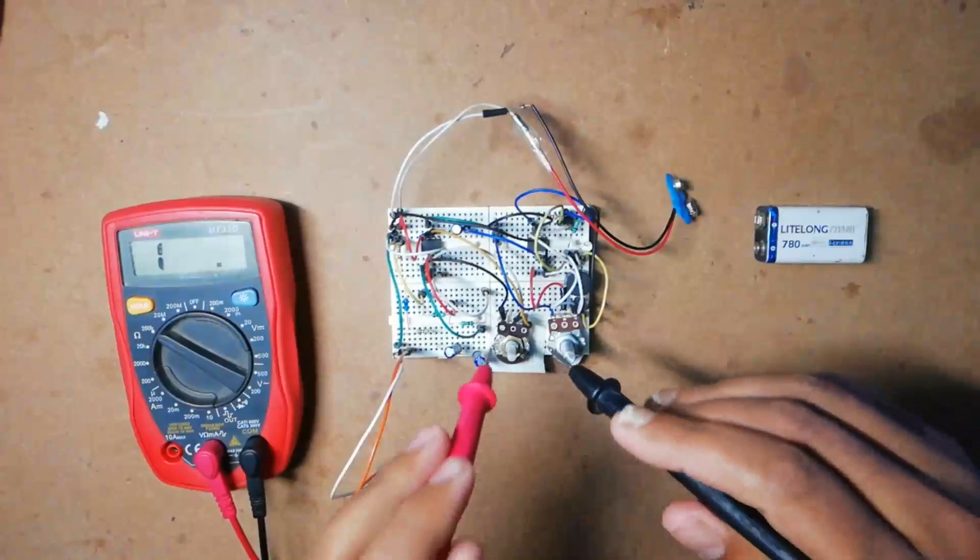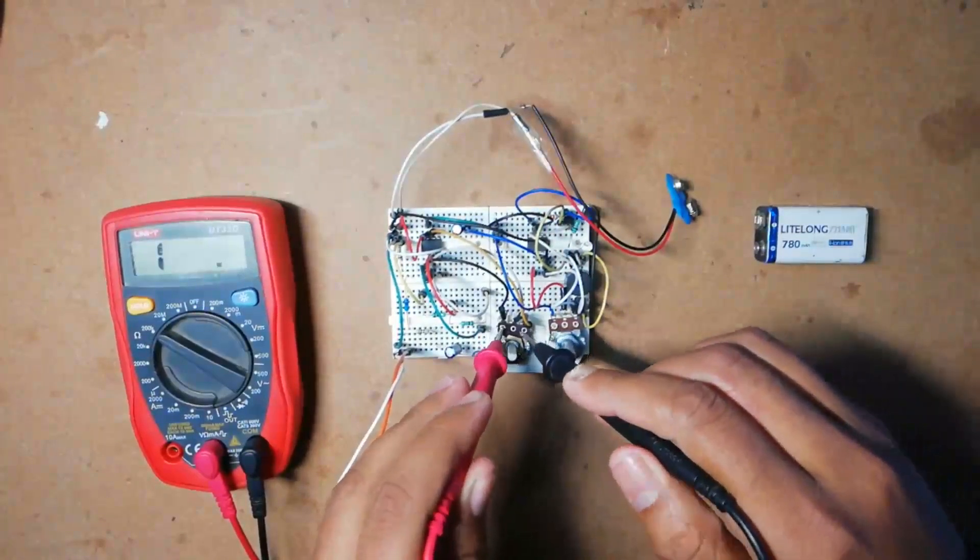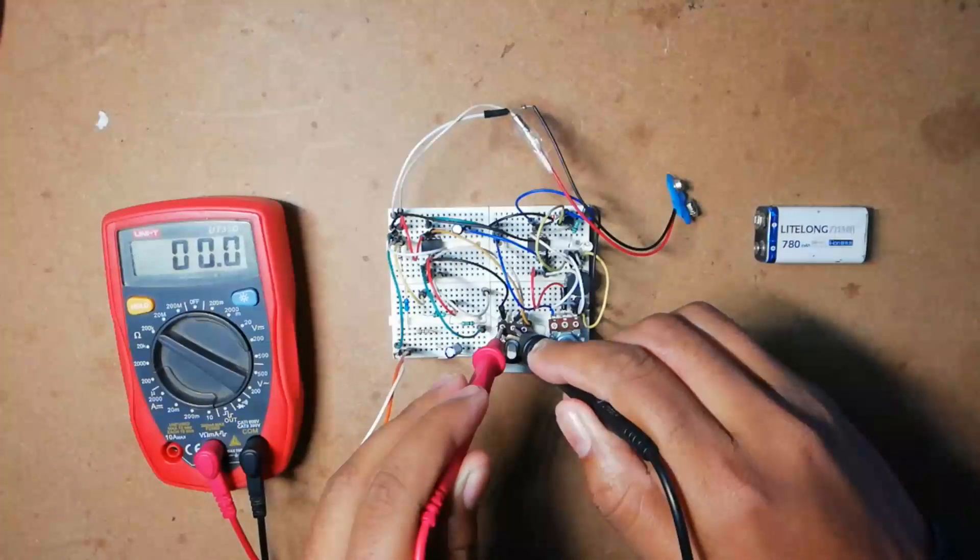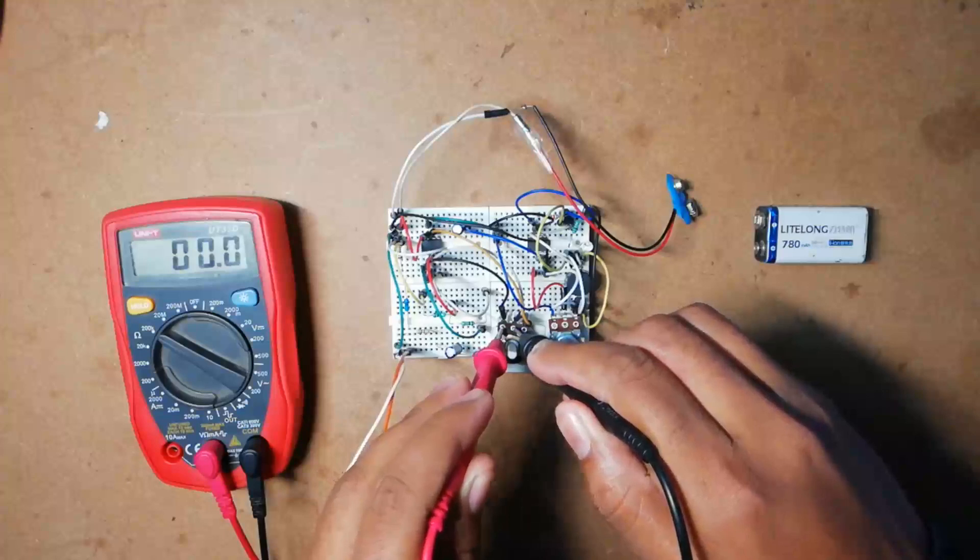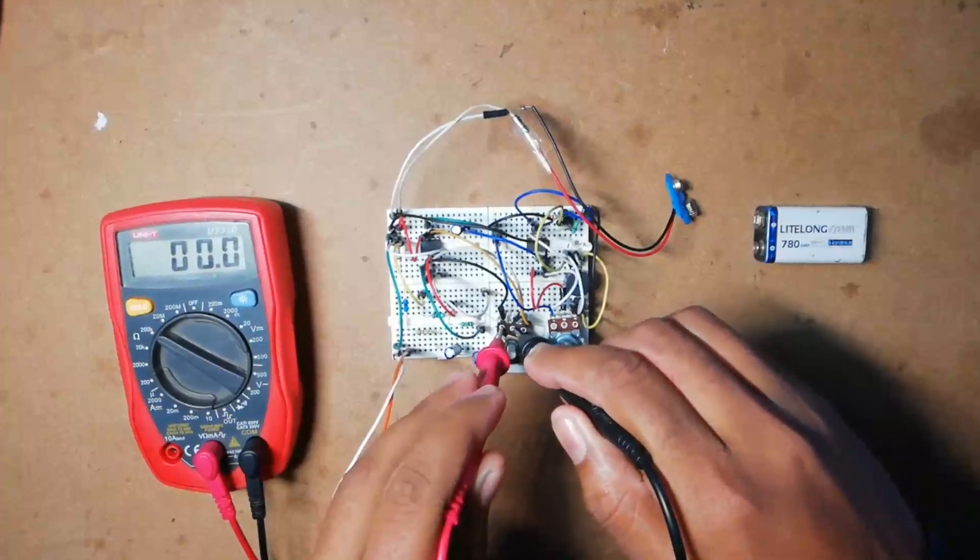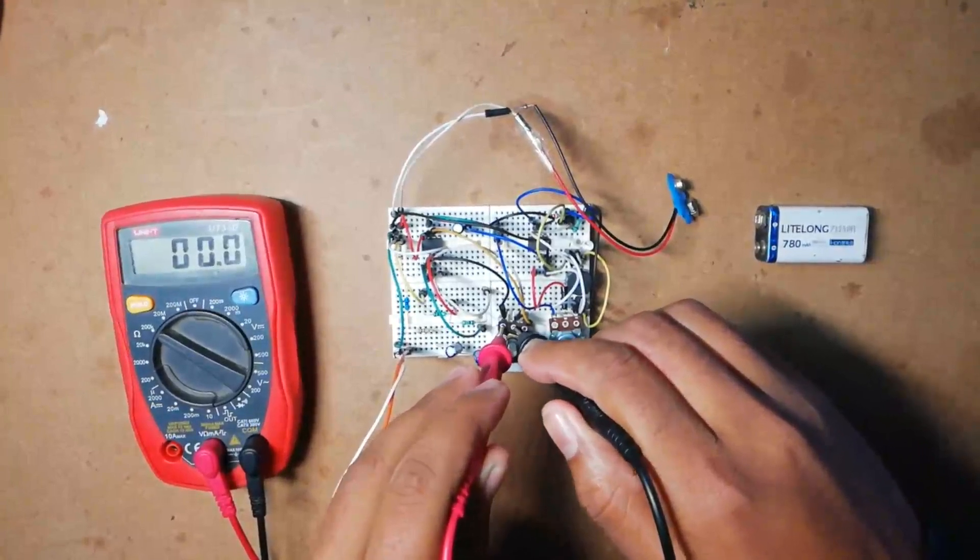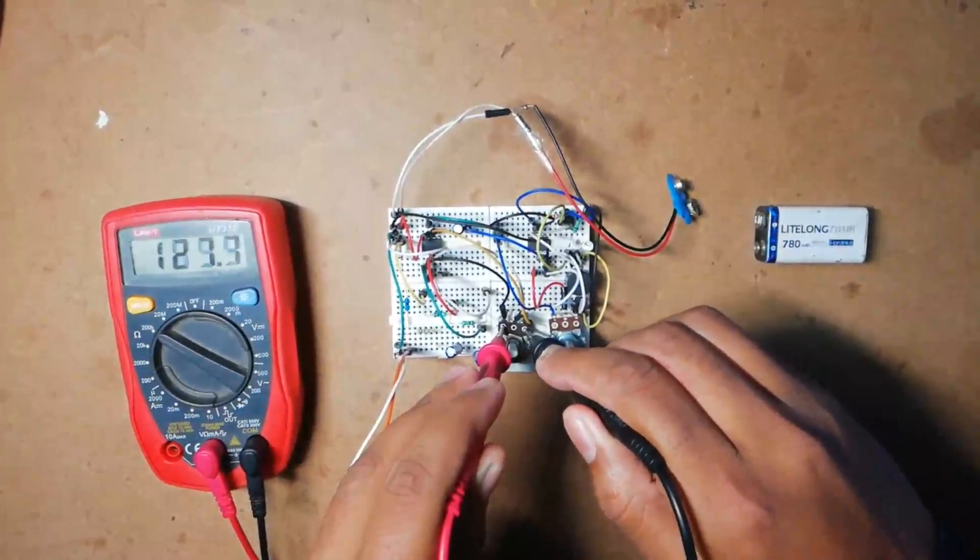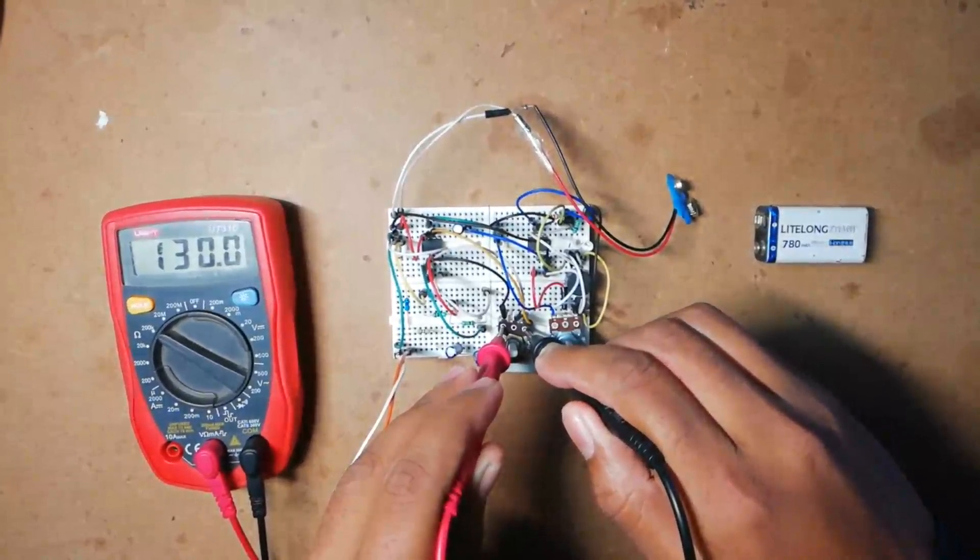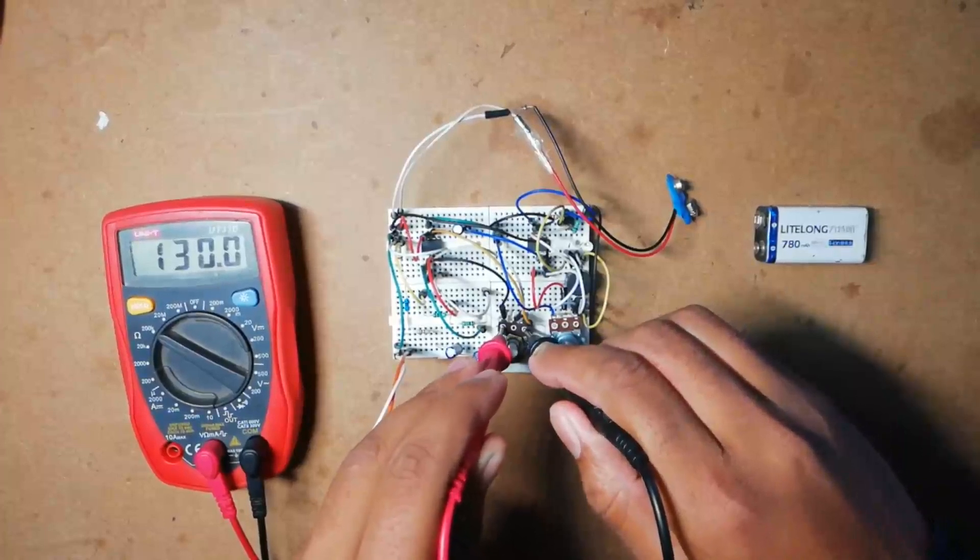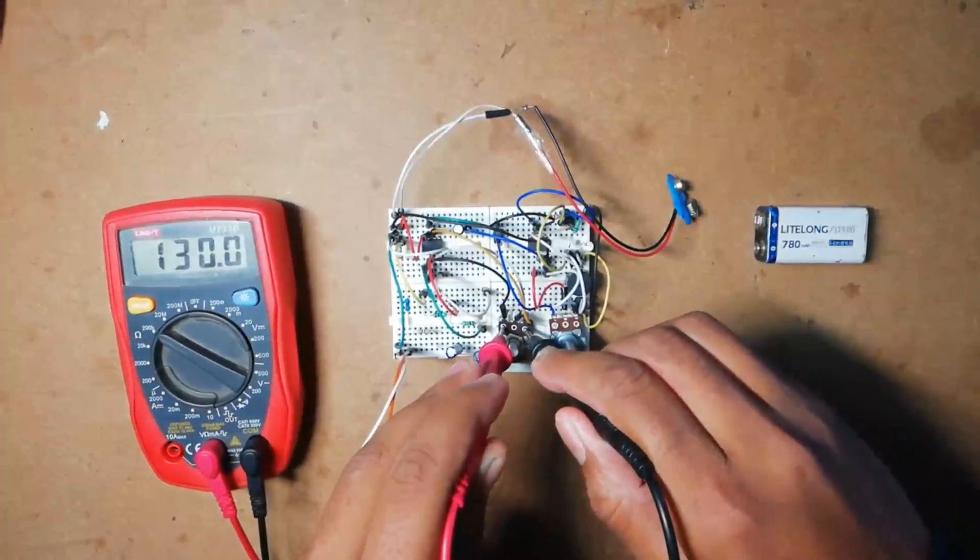You can see, here as I shorted wiper and fixed point, thus I get zero resistance. And the resistance between two fixed terminals is about 130 kilo ohms.